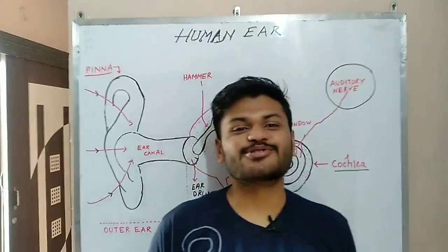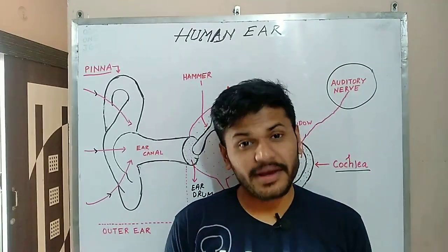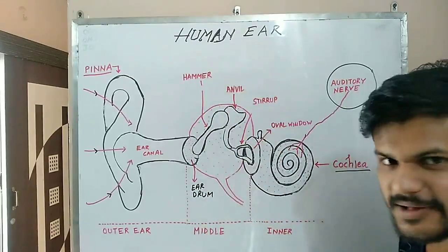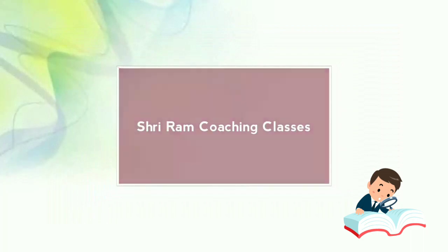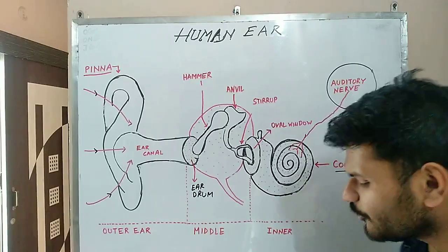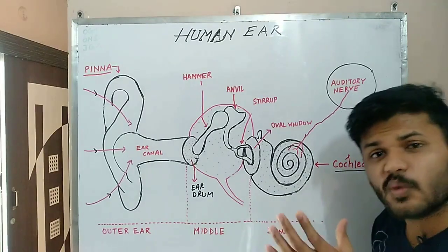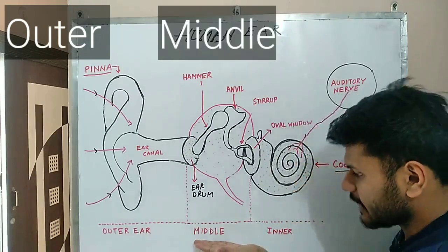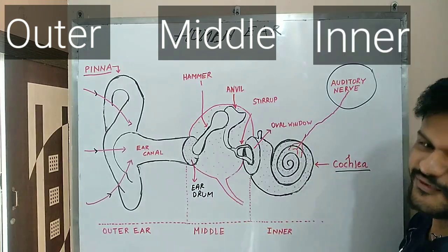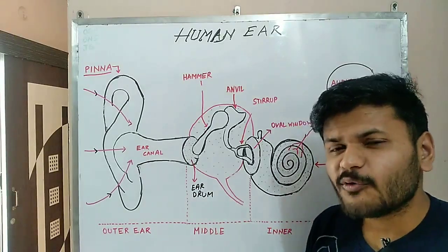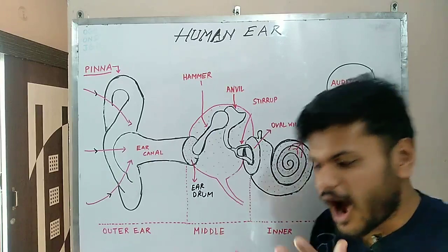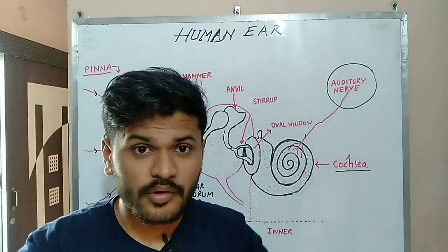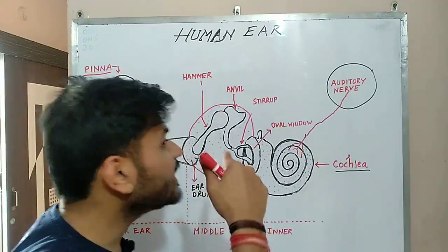Welcome to Shriram Coaching Classes. In this video I will tell you about the human ear and how it works. The human ear is divided into three parts: the first one is the outer ear, then the middle ear, and after that there is the inner ear. The function of the outer ear is to collect sound from the surroundings and transfer it to the main ear canal.